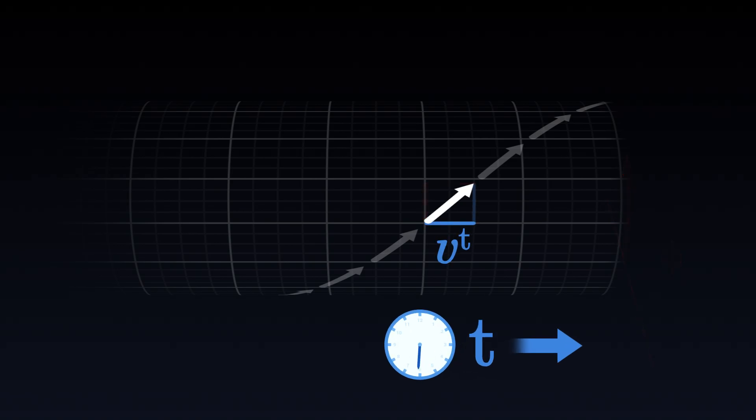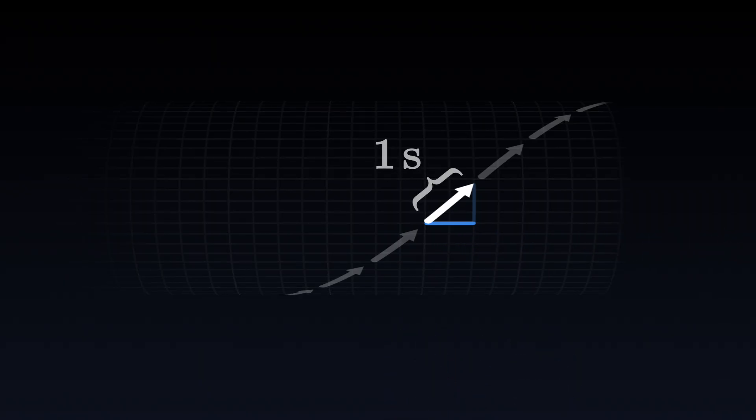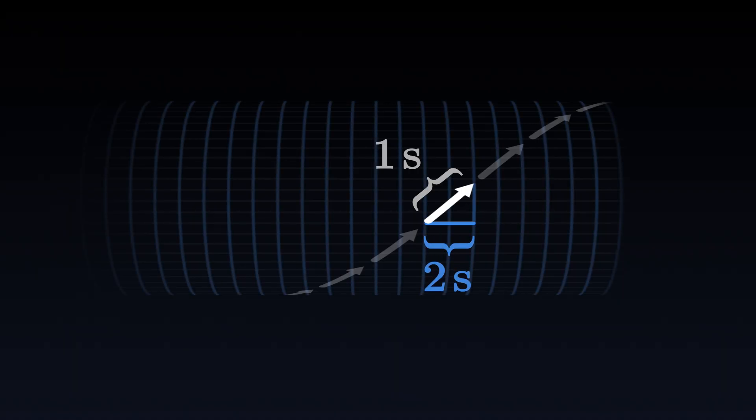The first component gives us its temporal speed. It is the rate at which our time passes compared to the satellite's proper time. If this value is two, for example, this means that for every second that passes for the satellite, two seconds will have passed for us.